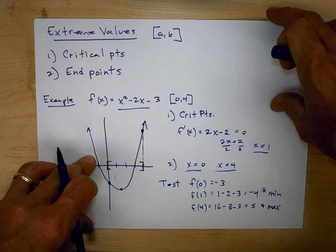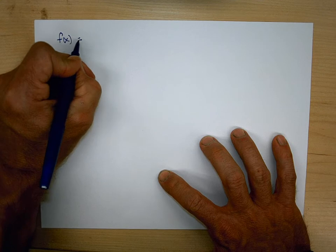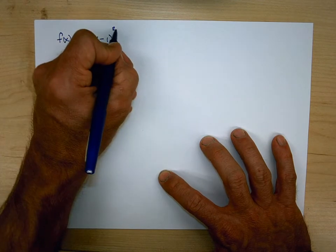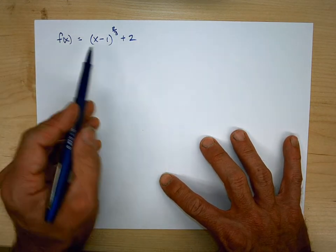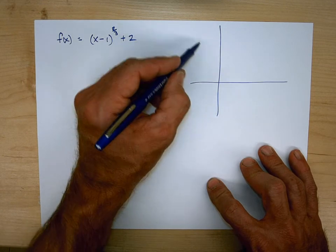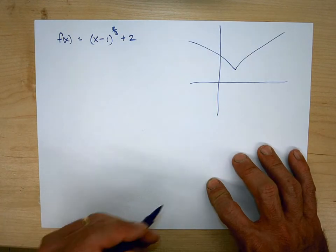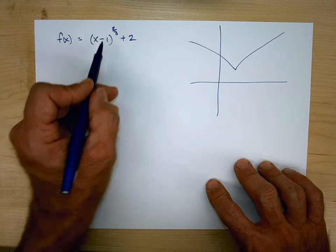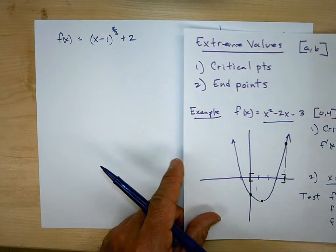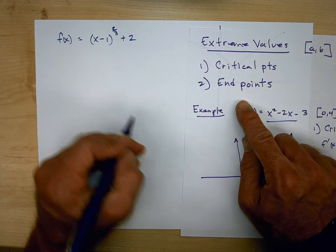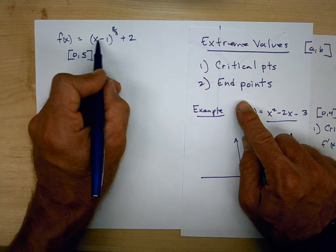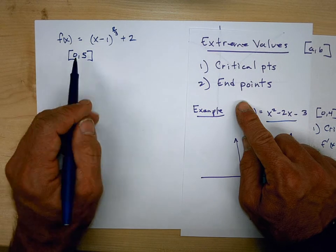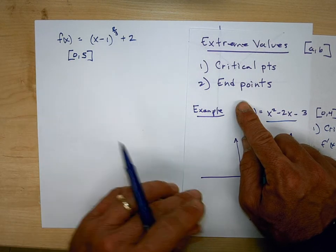Let's do one more example. I'm going to look at the function f of x equals (x minus 1) to the 2/3 plus 2. A quick sketch is that it's going to look something like this — we call it the Seagull graph. We're looking at this on the interval [0, 5]. This is a continuous root function on a closed interval, so we know it's going to have an absolute max and an absolute min. The first thing is to find the critical points, so we take the derivative.